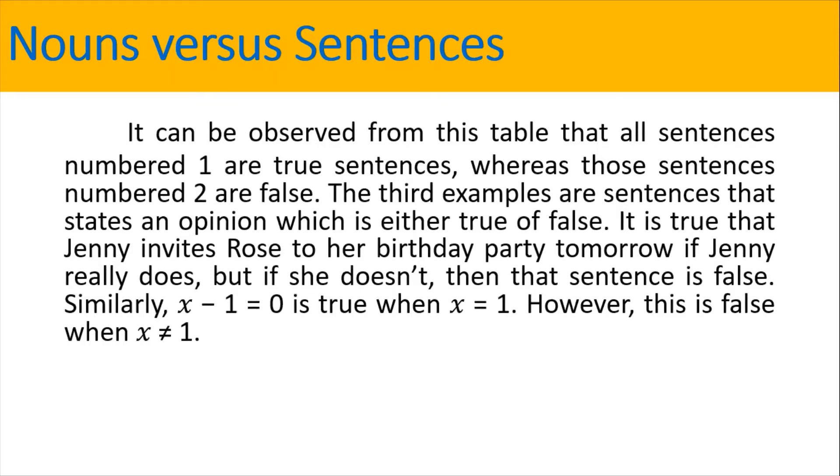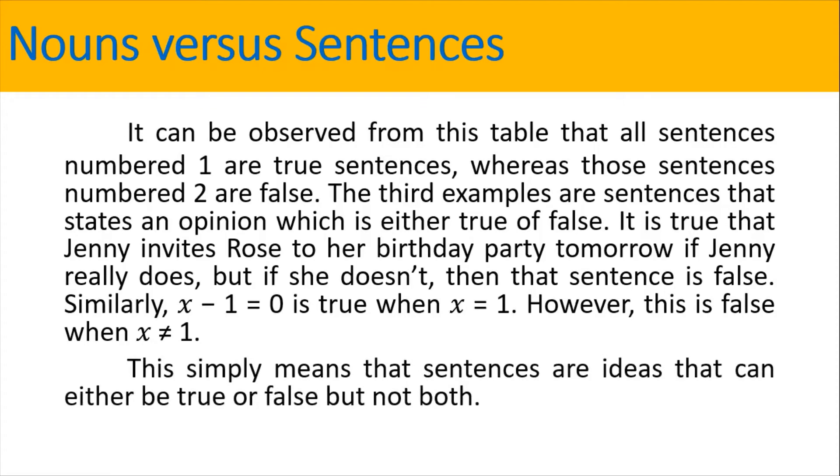It can be observed from this table that all sentences numbered 1 are true sentences. Whereas, those sentences numbered 2 are false. The third examples are sentences that state an opinion, which is either true or false. It is true that Jenny invites Rose to her birthday party tomorrow if Jenny really does. But if she doesn't, then that sentence is false. Similarly, x minus 1 is equal to 0 is true when x equals 1. However, this is false when x is not equal to 1. This simply means that sentences are ideas that can either be true or false, but not both.